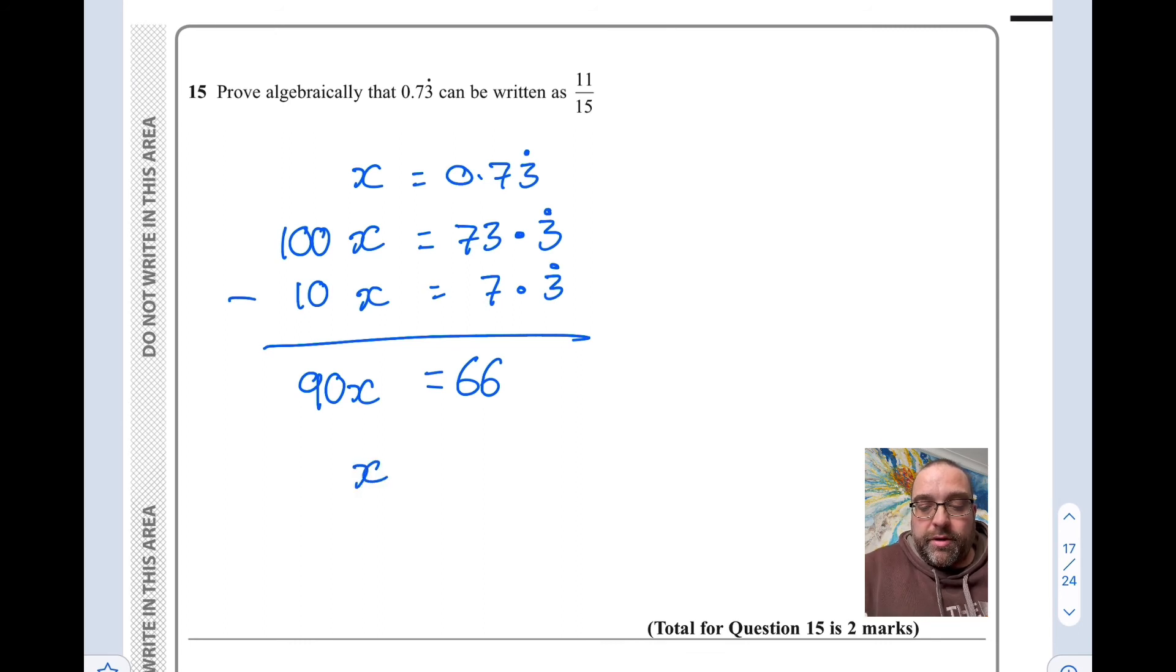Now we solve for x, so divide both sides by 90. 66 over 90.